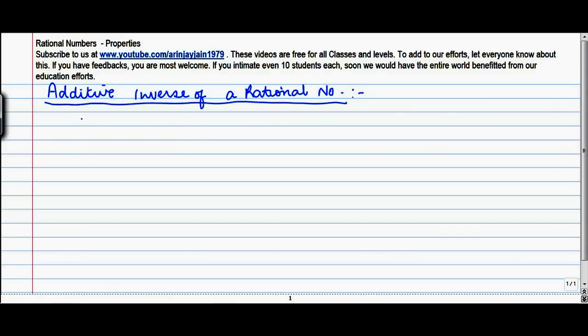We saw earlier, or you saw in your earlier classes, that for any natural number 7, the additive inverse is minus 7. What do you mean by additive inverse? Additive inverse is basically a number which, when added to the number itself, gives the sum as 0.